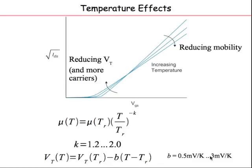Conversely, at low supply voltages where VGT is very small, any change in threshold voltage shows up as a large fractional change in VGT. Increasing temperature decreases Vt, so VGT increases substantially. In the subthreshold regime the current depends exponentially on VGT, so a small change in VGT has a large impact on current. At low supply voltages, increasing temperature actually increases current. There exists a crossover point where the two effects balance and temperature has no impact on current.